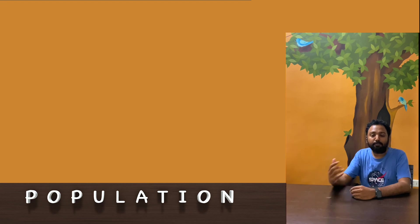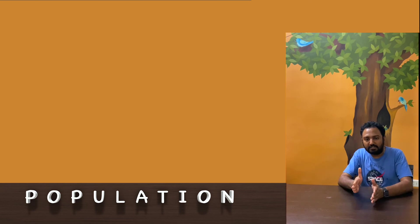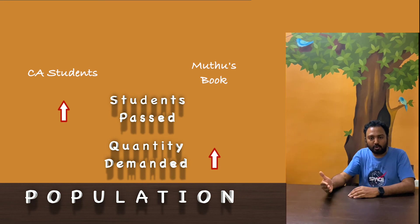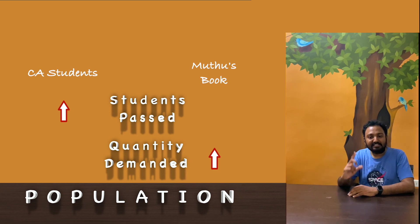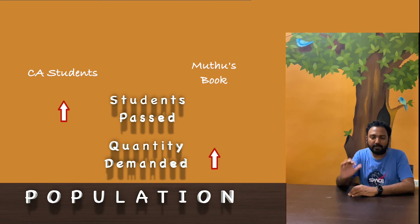The second P in PIPE stands for Population. For example, my income tax book targets CA intermediate students. The quantity demanded depends on the population of CA students entering the intermediate level. If more students enter intermediate this year compared to last year, demand for my book increases automatically. If fewer students come in, my demand decreases. Population is another factor that can shift the demand curve upward or downward.